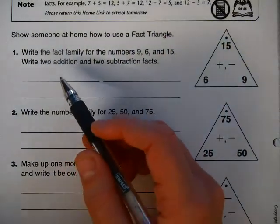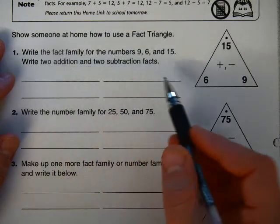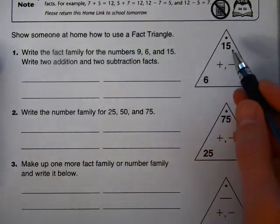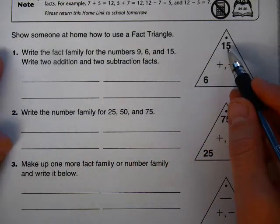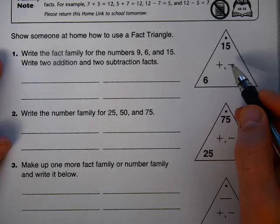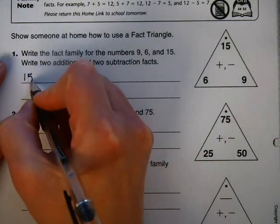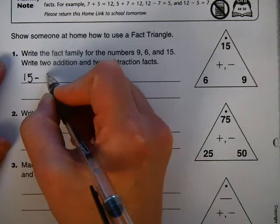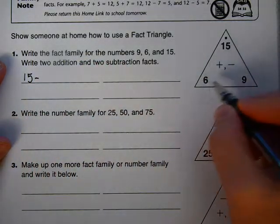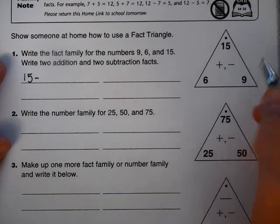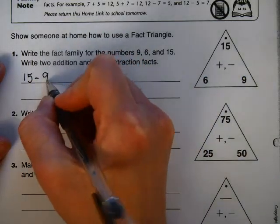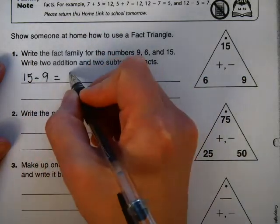Okay, so this says we already read it, so we're going to do that. So I'm going to start with the big number. Okay, and I'm going to do some subtraction first. So if you start with the big number, you can do 15 minus, and it doesn't matter which one you choose next. I'll take the second biggest number. 9 equals 6.